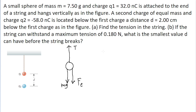Now, if we assume that the string is taut, then that means that sphere one, the positively charged sphere, is not moving at all. And if it's not moving at all, then this means that the net force on that sphere is equal to zero. And as we can see from our free body diagram, this net force of zero must be a net effect of the different forces acting on the sphere in the vertical direction.